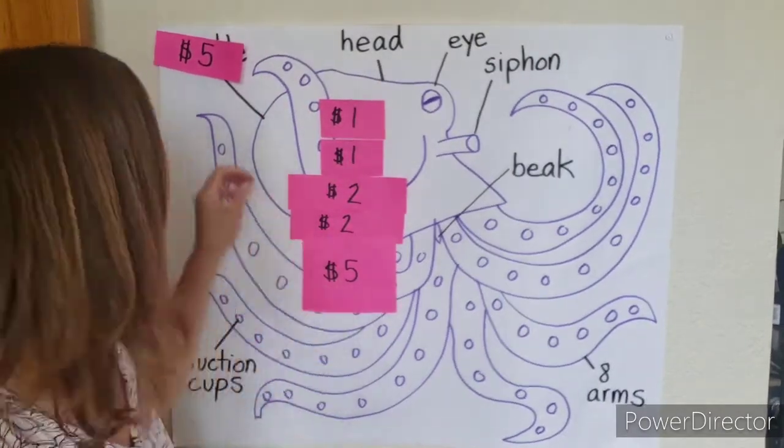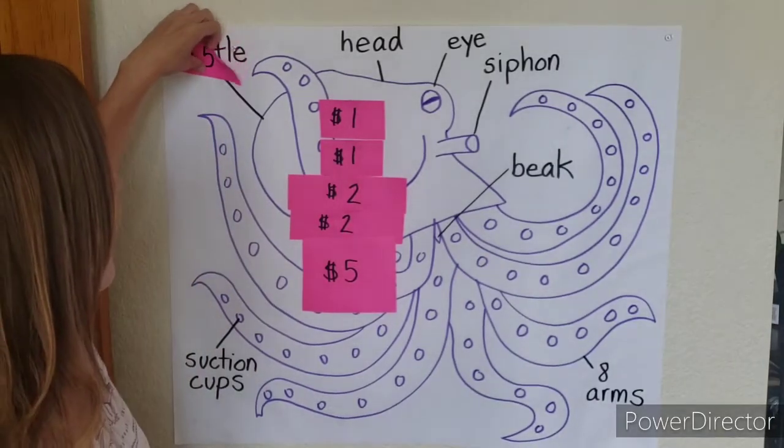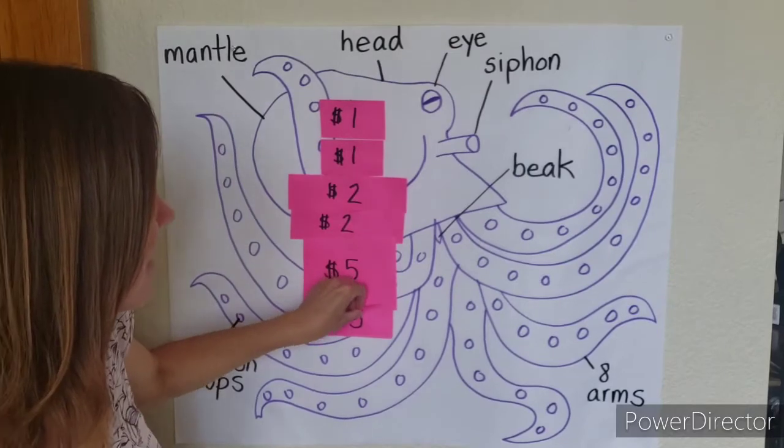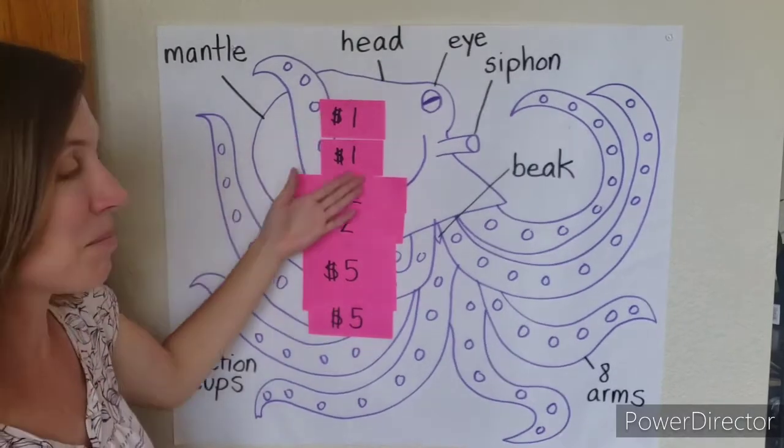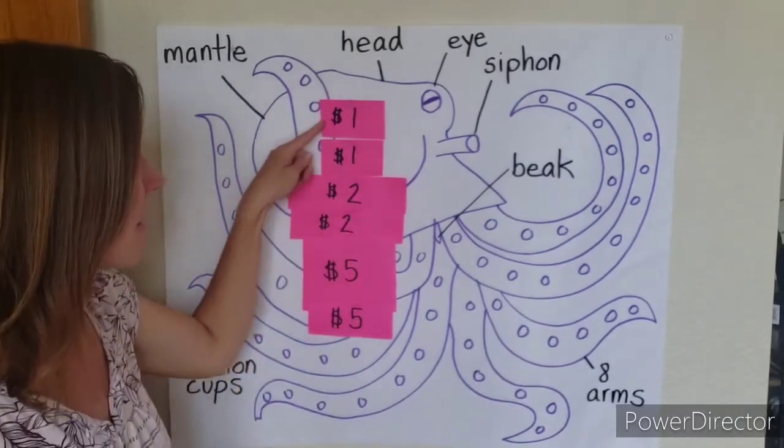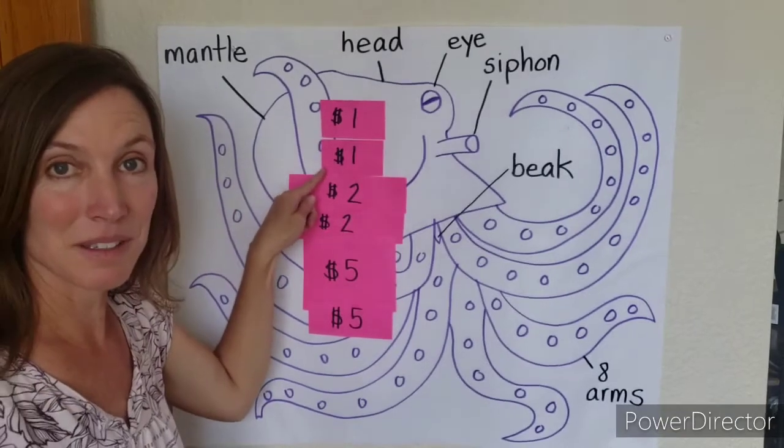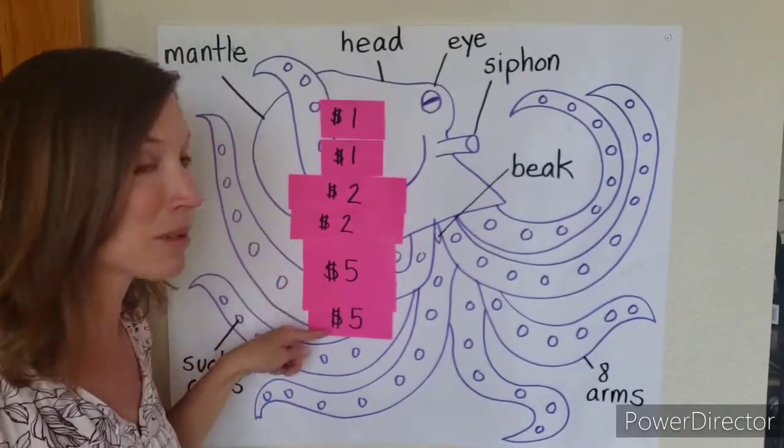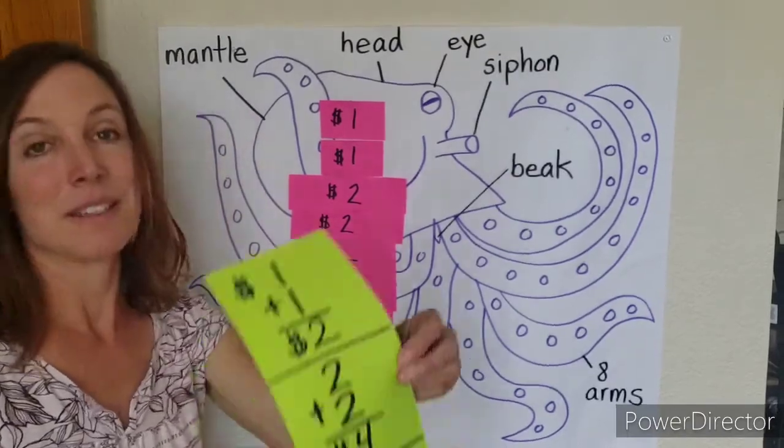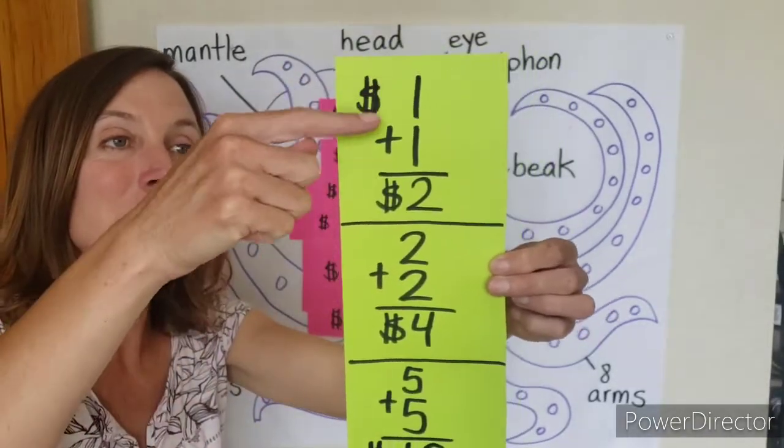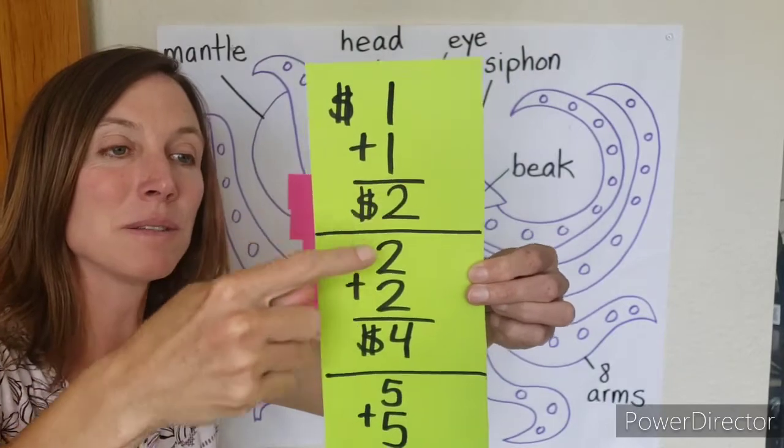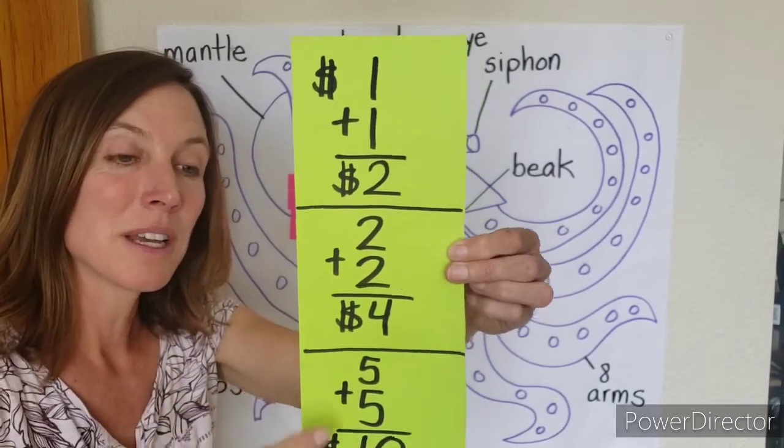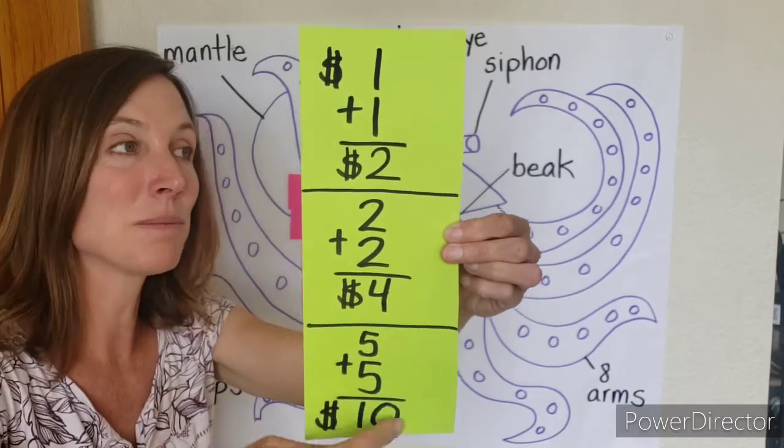Now what we're gonna have to do is add up all of these together. So one plus one is two, two plus two is four, and five plus five is ten. So what we're doing is we're adding up the two dollars which make two, we're adding two dollars twice which makes four, and we're adding five dollars twice which makes ten. These are all double facts.